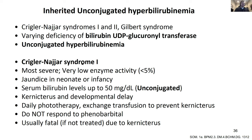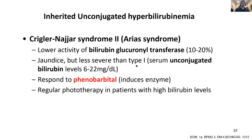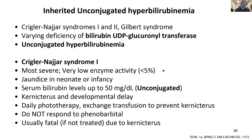Crigler-Najjar type 1: unconjugated, most severe, less than 5% enzyme activity, early onset. Type 2: 10-20% enzyme activity, not as severe, slightly later onset - a few years old. Important point: because there's enough enzyme in type 2, it can respond to phenobarbital. You don't need to know the mechanism, but phenobarbital works with type 2 because it's less severe. You wouldn't use phenobarbital in type 1 because there just isn't enough enzyme.